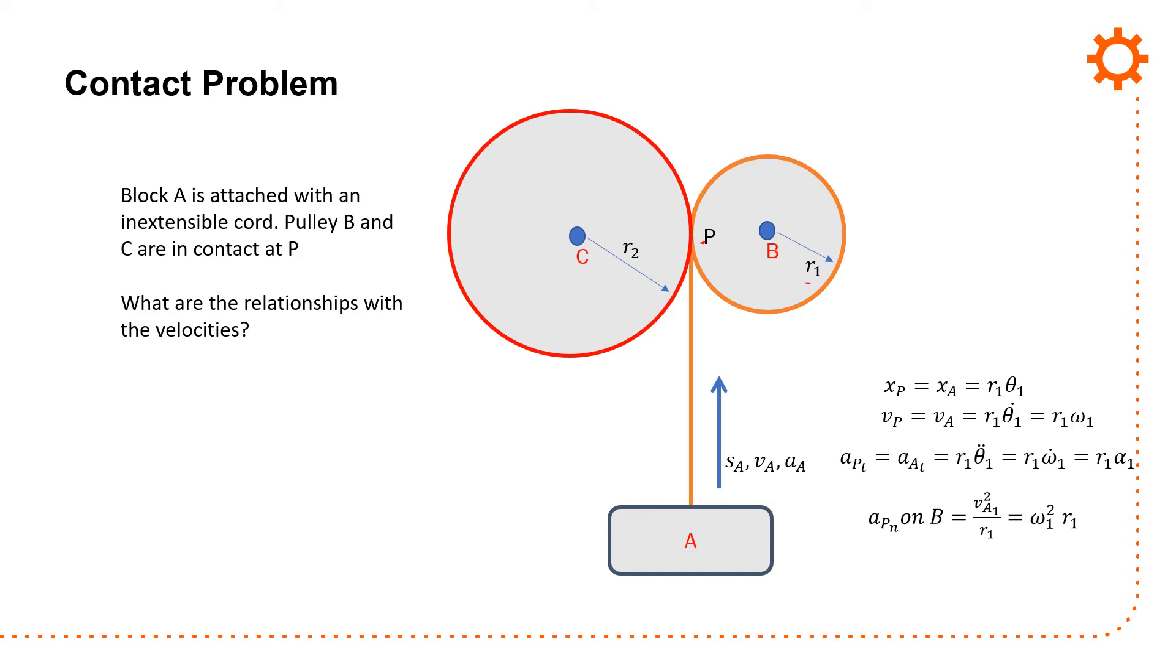Acceleration of P on B normal is going to be the same thing: vA squared divided by r1, which will equal omega squared r1. So we know what the direction of that is in order for that to be true. Then this pulley, pulley C, has to be rotating in the opposite sense. So this one's rotating clockwise—so that's a negative rotation because x, y, and z—and so this one is a positive rotation, this is negative, this is positive. You expect that when the two bodies come into contact and they have the same velocity, they can't rotate in the same direction, and that would not happen in that case.